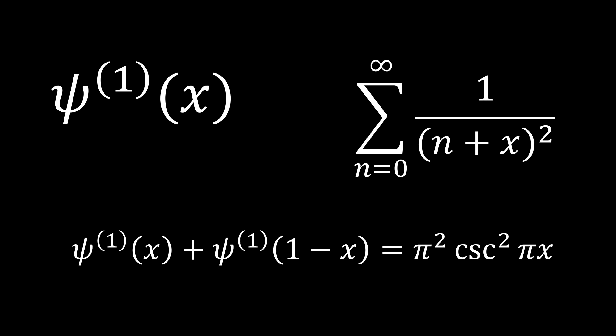Hello guys and welcome to another calculus video. In this video we are going to be calculating values of the trigamma function. It looks just like this and it's actually equal to this expression on the right. It's easily derived using the definition of the digamma function and then differentiating with respect to x, since this is just the first derivative of the digamma function. Unlike the digamma function, the trigamma function doesn't have an easy way to convert its values to an integral and solve that way. So you can't actually find the value for any rational number like you can for the digamma function. There are actually only a few special values where you can evaluate it.